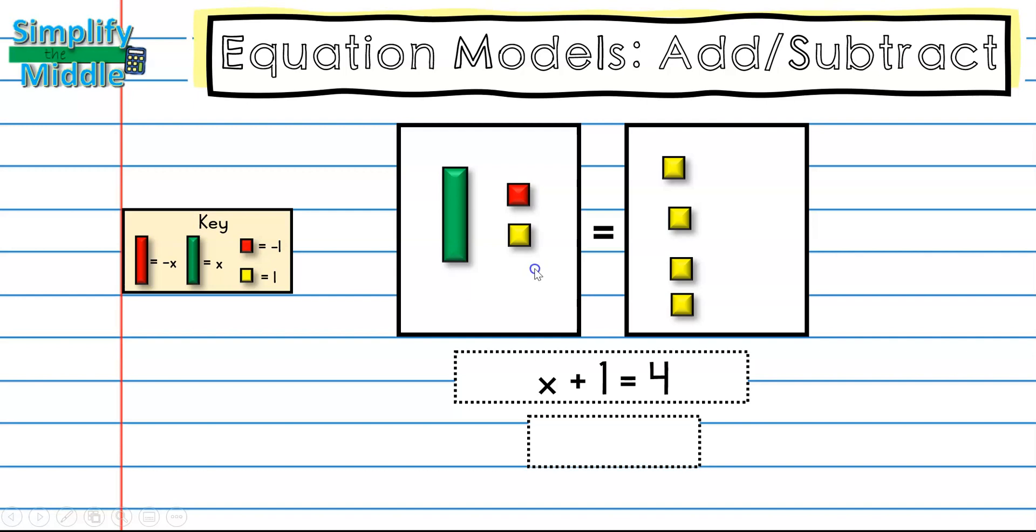Now let's cross out our zero pairs. I have one here and I also have one over here. So now I can see that my answer is x equals, and I can pretend as though these are not here, and I have one, two, three. I can go ahead and put this answer back into my original statement, and three plus one is four, so I know I'm correct.